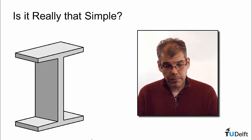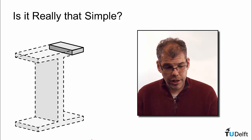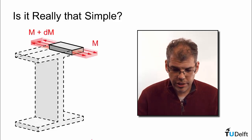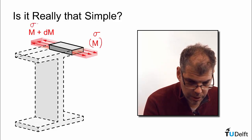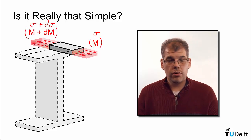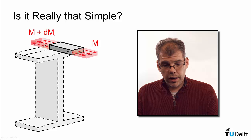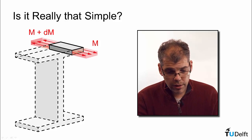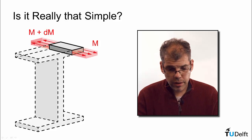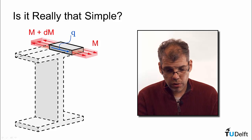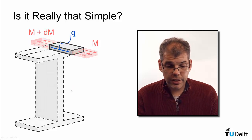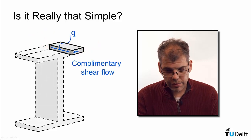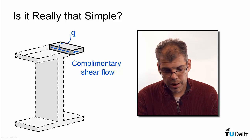Let's take a closer look at our beam and cut away a section of that flange. There will be a bending stress distribution — sigma here as a result of moment M, and sigma plus d-sigma as a result of the internal moment plus differential moment. As a result of the higher magnitude of the stress, an internal shear flow q has to develop along this face to balance the equilibrium of these two resultants. And because of the principle of complementary shear, we will have a complementary shear flow acting in the cross-section of our beam, as shown here.